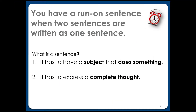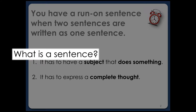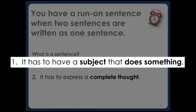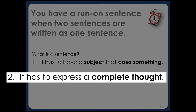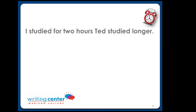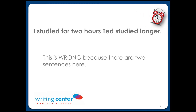You have a run-on sentence when two sentences are written as one sentence. Let's back up a little bit so we can remind ourselves what a sentence is. A sentence needs to pass two tests: it has to have a subject that does something, and it has to express a complete thought. When it comes to a run-on sentence, the problem is you have two sentences that pass these tests without correct punctuation between them — they literally just run together.